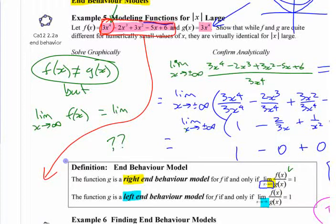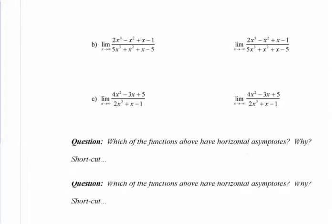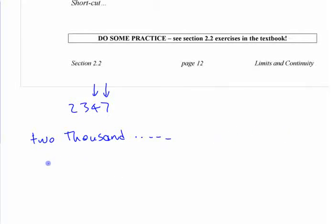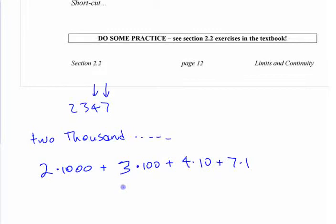If you think about 3x to the fourth and that sort of thing, think back to when you were a little kid learning how to write numbers. If you write 2347, each digit is a place value, and probably at some point they had you write it out the long way: 2000, and so on. You might have been asked to write it as 2 times a thousand plus 3 times a hundred plus 4 times ten plus 7 times one.